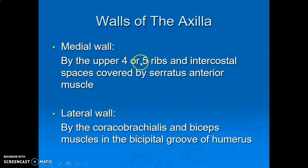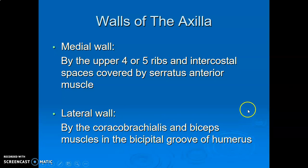The medial wall is formed by the upper four or five ribs and intercostal spaces, covered by serratus anterior muscle. The lateral wall of the axilla is formed by coracobrachialis and the biceps muscle in the bicipital groove of the humerus. Anteriorly: pectoralis major, minor, and subclavius. Posteriorly: subscapularis, teres major, latissimus dorsi. Medially: upper four to five ribs with intercostal spaces covered by serratus anterior. Laterally: the bicipital groove of the humerus containing the long head of biceps, plus coracobrachialis.